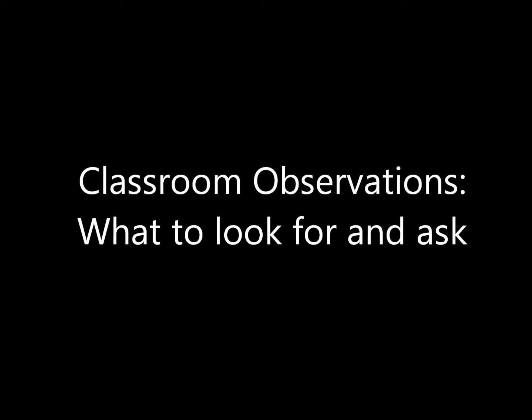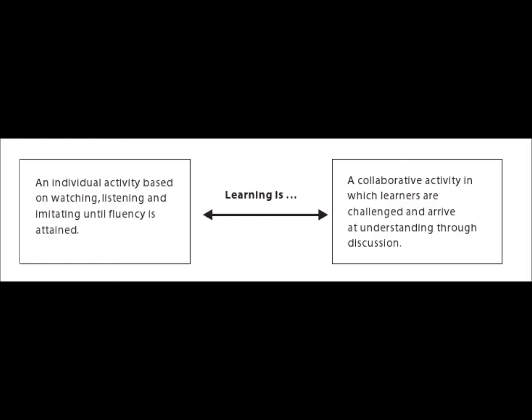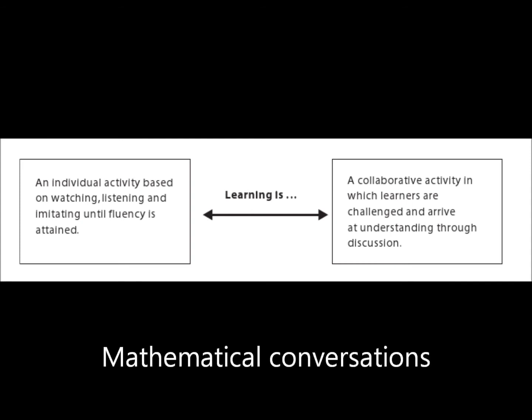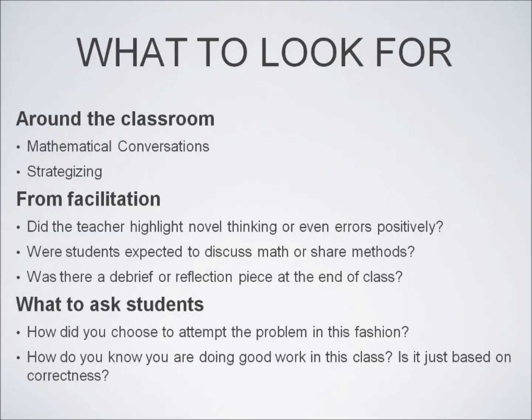Classroom observations. Looking back at our connected vision of math instruction, here is what learning looks like in a math classroom. Rather than individual activities based around listening and imitating, we want to see students discussing mathematics collaboratively. The mathematical discussions taking place in the classroom are the primary and perhaps best indicator of the quality of math instruction and the learning taking place. So when you are looking around the classroom, be on the lookout for mathematical conversations and strategizing. From the facilitator, look for these things: Did the teacher highlight novel thinking or even errors? Was there a debrief or reflection piece at the end of class? Were students expected to discuss mathematics with each other?